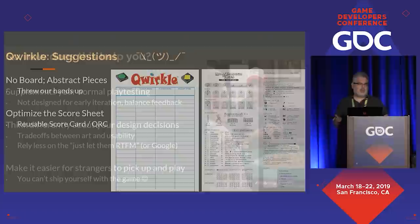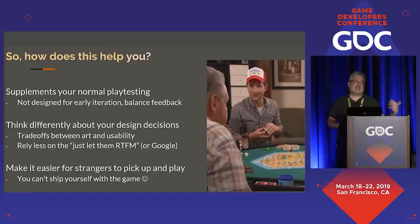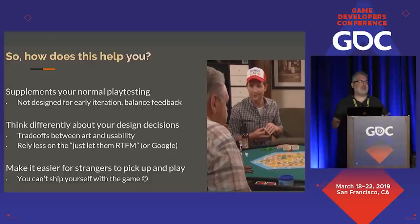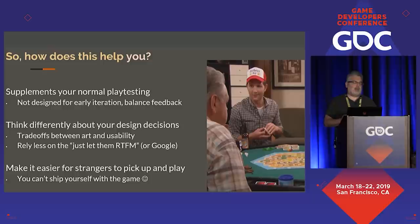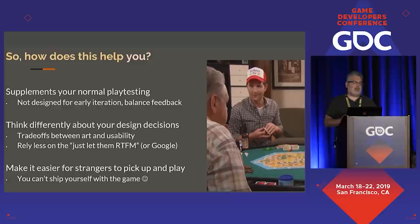So how does this help you? None of you are going to come up with the next Cartagena expansion. The reason I'm presenting this is more about a process that might be useful to you — one that supplements your normal play testing. You don't use this process for early game development where you're iterating on what's fun and interesting strategically, and it's not about balance feedback or testing for degenerate conditions or golden paths. The idea is to help you think differently about your design decisions and think hard about trade-offs between art and usability, relying less on 'we'll just solve it with the manual' or 'people will Google it.' The end result: let's make it easier for people to pick it up and play, because you can't ship yourself with the game.